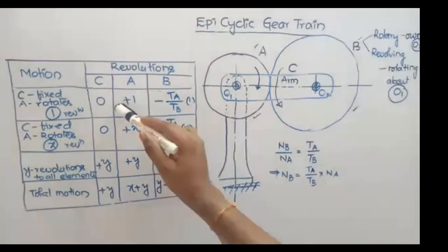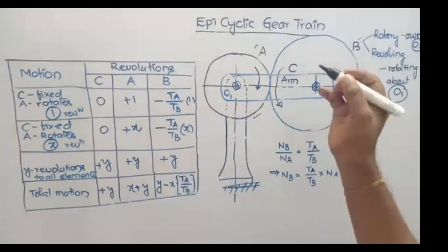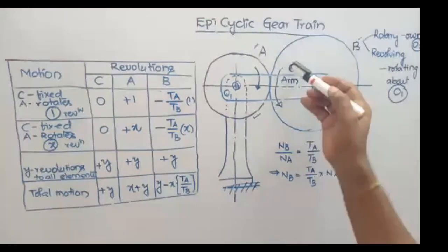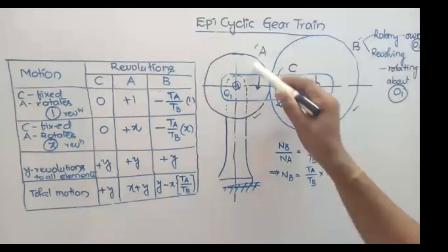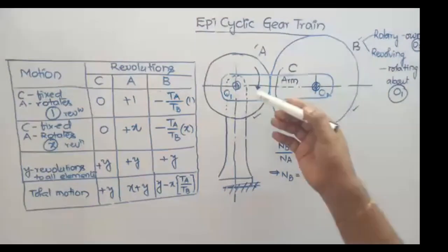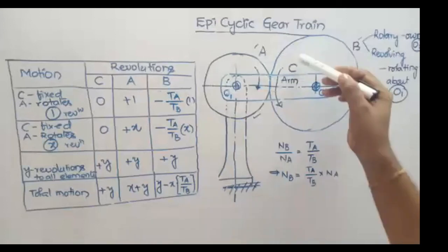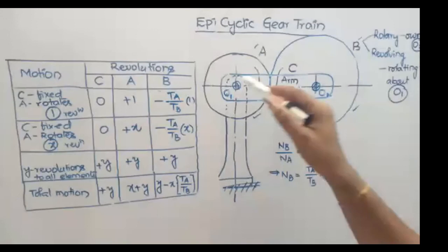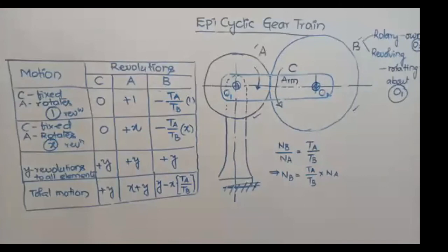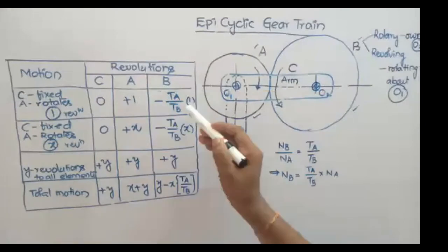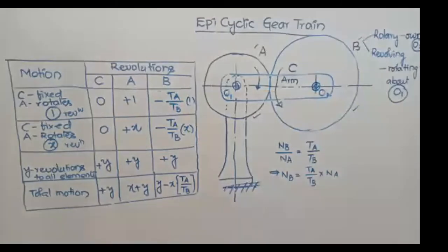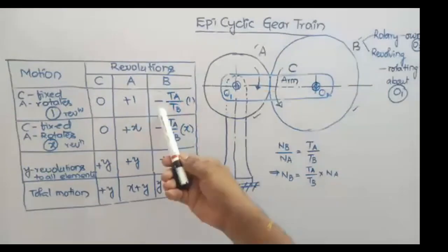Here I am assuming clockwise rotation as positive and anti-clockwise rotation as negative. If you want, you can consider the opposite convention — clockwise as negative, anti-clockwise as positive. In this case, I am taking clockwise as positive and anti-clockwise as negative. Since there is external contact between the two gear wheels, both gear wheels rotate in opposite directions. So if gear wheel A rotates in the positive sense, gear wheel B rotates in the negative sense. Gear wheel A completes one revolution, and gear wheel B completes minus TA by TB revolutions.